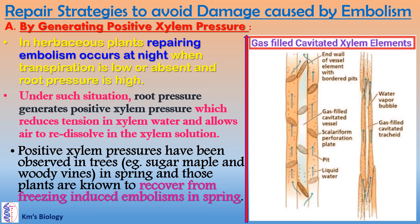Let us discuss about the repair strategies to avoid damage caused by embolism. The first strategy is by generating positive xylem pressure. In herbaceous plants, repairing embolism occurs at night when transpiration is low or absent and root pressure is high. Under such situations, root pressure generates positive xylem pressure, which reduces tension in xylem water and allows air to re-dissolve in the xylem solution. Positive xylem pressures have been observed in trees — for example, sugar maple and woody vines — in spring, and those plants are known to recover from freezing-induced embolisms in spring.